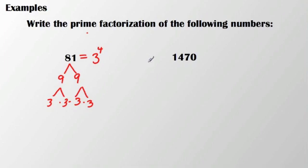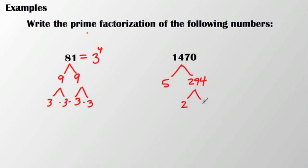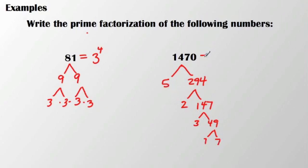Now let's take a look at the number 1470 — it's a larger number. It ends in 0, so I know it's divisible by 10 or 5. Since I'm focusing on prime numbers, I'm going to divide it by 5, which leaves me with 294. Now I know 294 is even, so I divide that by 2, leaving me with 147. It's not even, but if I take 1 plus 4 is 5, plus 7 is 12, so I know it's divisible by 3. That leaves me with 49, and I know 49 is a square number divisible by 7. So the prime factorization of 1470 is 2 times 3 times 5 times 7 squared.